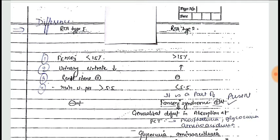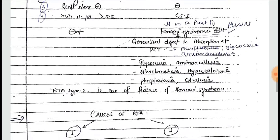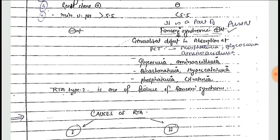Type 2 is part of Fanconi syndrome, where there is a generalized defect in absorption at the PCT, leading to glycosuria, aminoaciduria, bicarbonaturia, hypercalciuria, phosphaturia, and citraturea.